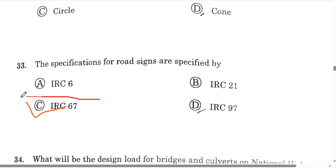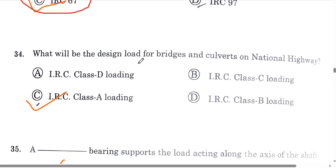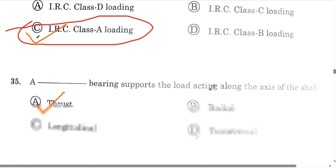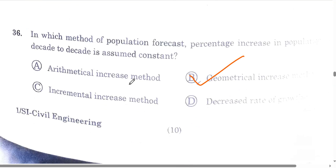Question number 33: road signs are specified in IRC 67. Option C is the correct answer. Question number 34: what is the design load for bridges and culverts on a national highway? The design load is IRC Class A loading. Question number 35: a thrust bearing supports the load acting along the axis of the shaft. Option A is the correct answer. Question number 36: in the geometrical increase method, the percentage increase in population decade to decade is assumed to be constant.